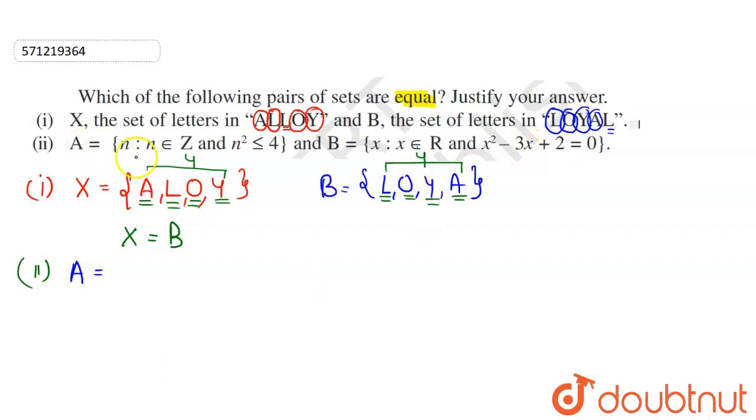So writing A into roster form, this will be: n belongs to set of integers, so if I write minus 1 square is less than or equal to 4, which is also true. 0 square is less than or equal to 4, this is also true.